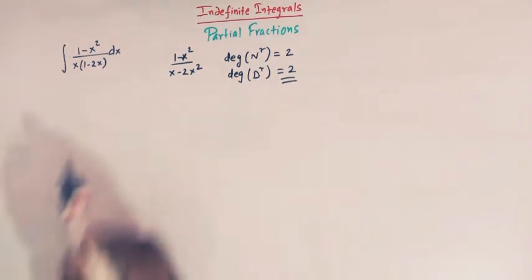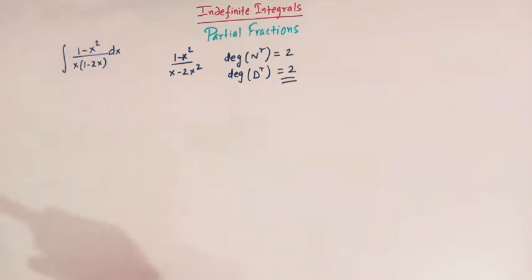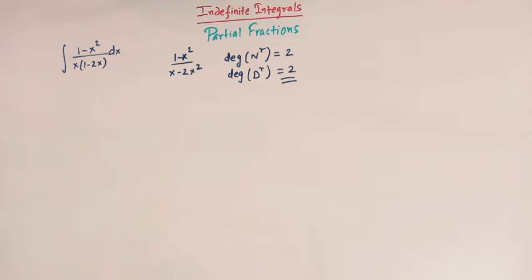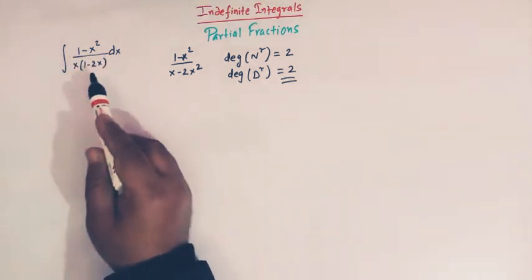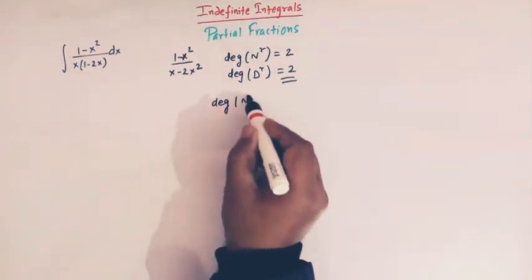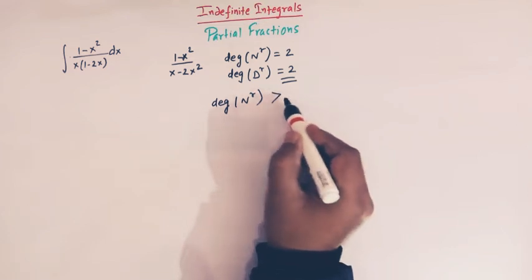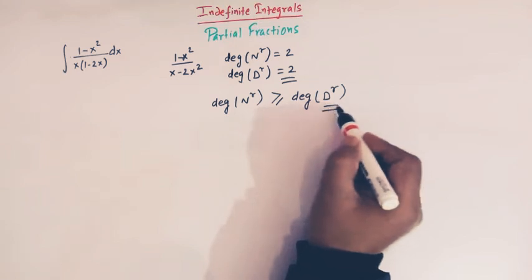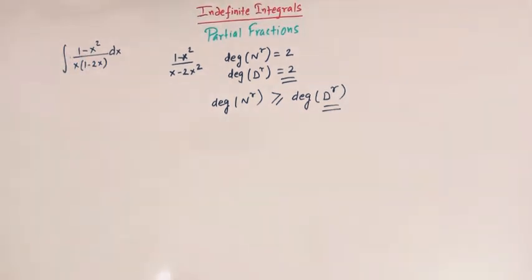So before decomposing this rational function into partial fractions, we have to first divide the numerator by the denominator. In such problems, whenever we have a rational function where the degree of the numerator is greater than or equal to the degree of the denominator, we first divide the numerator by the denominator. So let us first divide (1 minus x squared) by (x minus 2x squared).